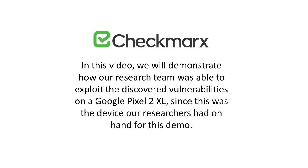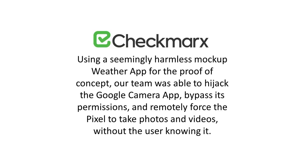In this video, we will demonstrate how our research team was able to exploit the discovered vulnerabilities on a Google Pixel 2 XL, since this was the device our researchers had on hand for this demo. Using a seemingly harmless mock-up weather app for the proof of concept, our team was able to hijack the camera app, bypass its permissions, and remotely force the Pixel to take photos and videos without the user knowing it. Let's go ahead and get started.